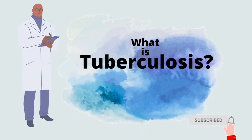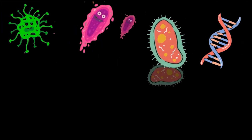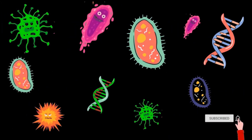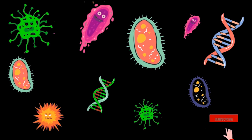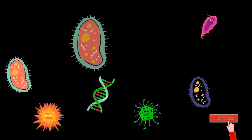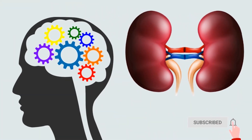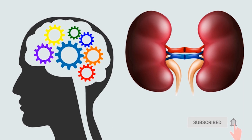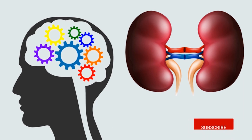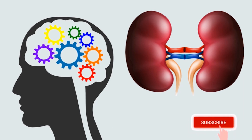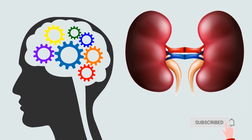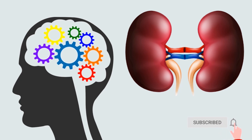Tuberculosis is a disease caused by bacteria called Mycobacterium tuberculosis. It most often affects the lungs but could have a negative impact on other parts of the body like the brain, the kidney, joints, and the spine.